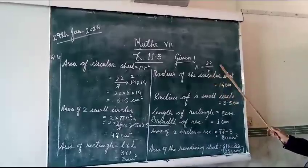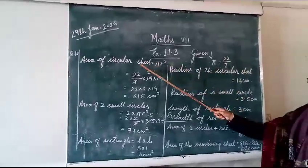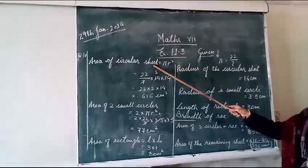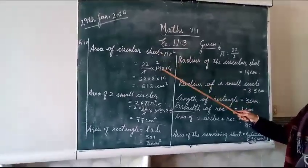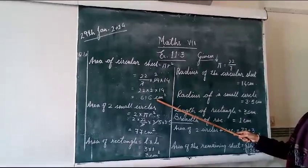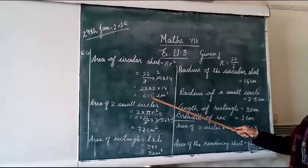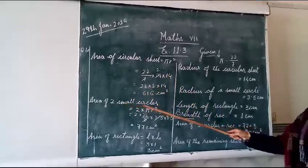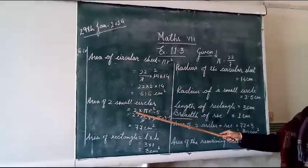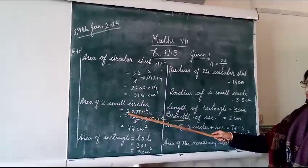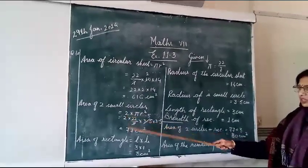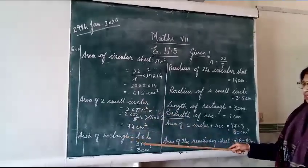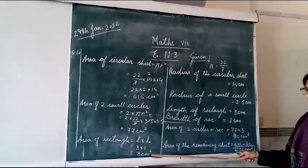Pi's value is given, so first of all you will find the area of the whole circular sheet with the formula pi r square. Radius is given, so the bigger circle's area is 616 cm square. And then you will find out the area of 2 small circles by the formula 2 into pi r square. Then you get the area of small circles and then area of the rectangle length into breadth, 3 cm square.